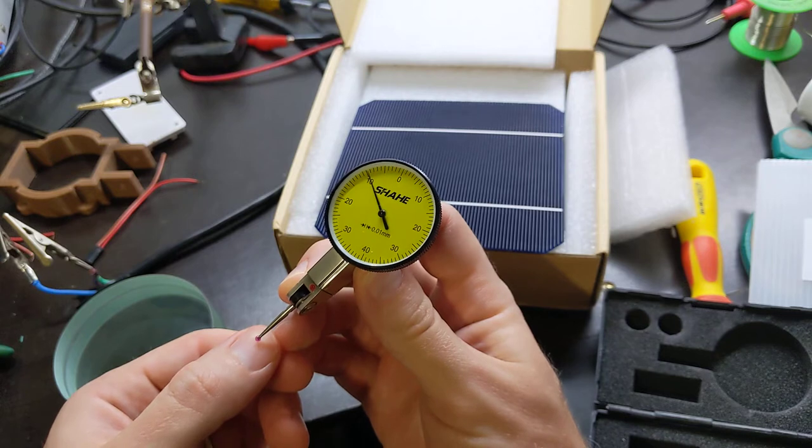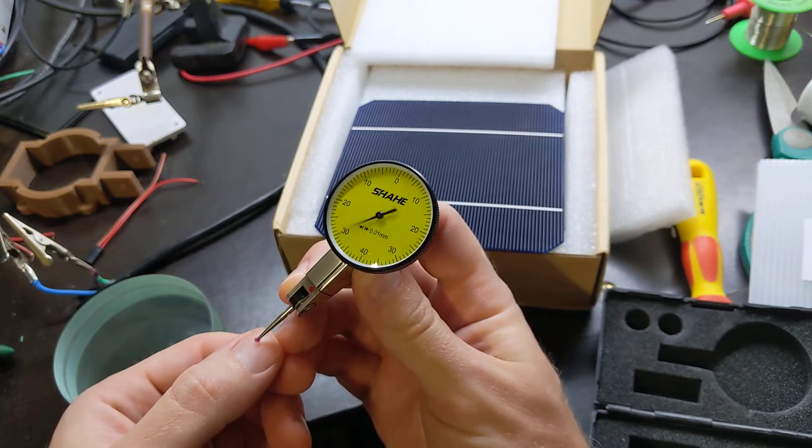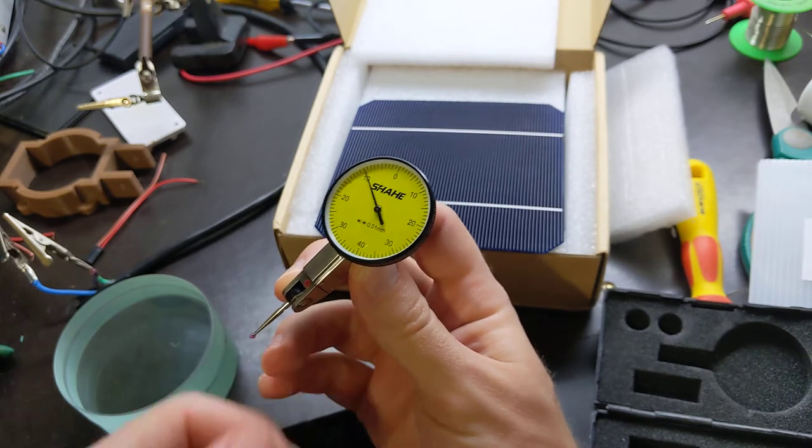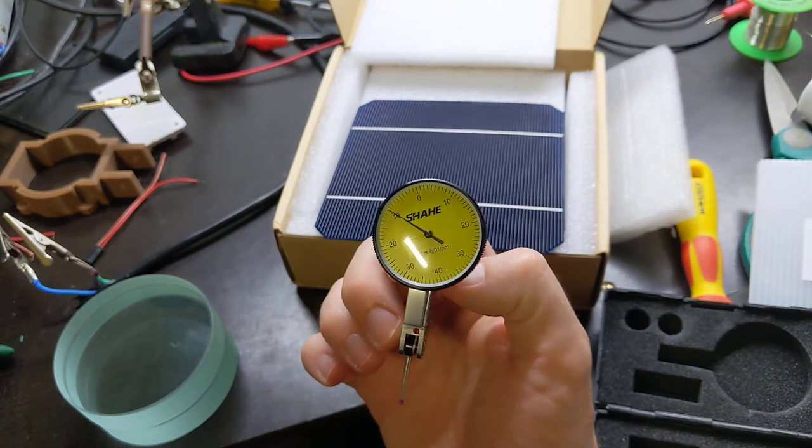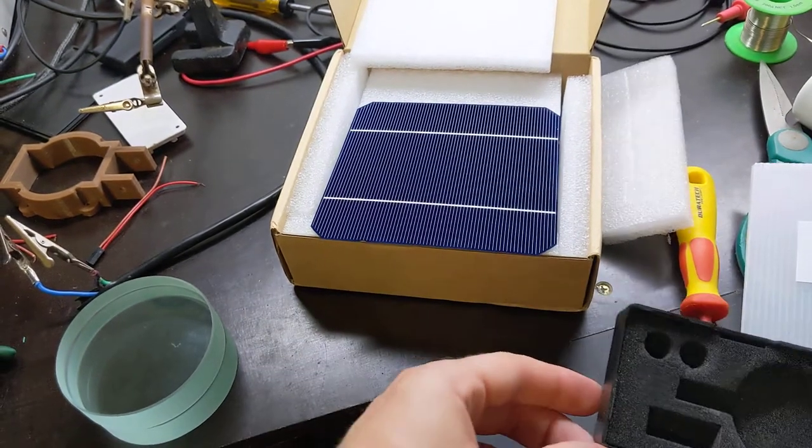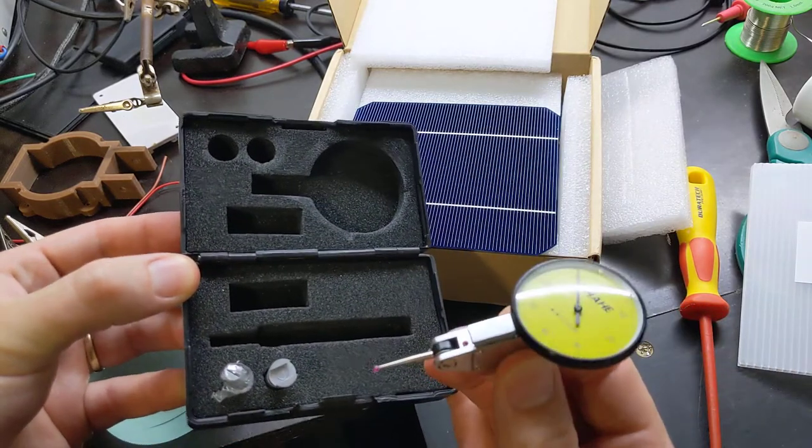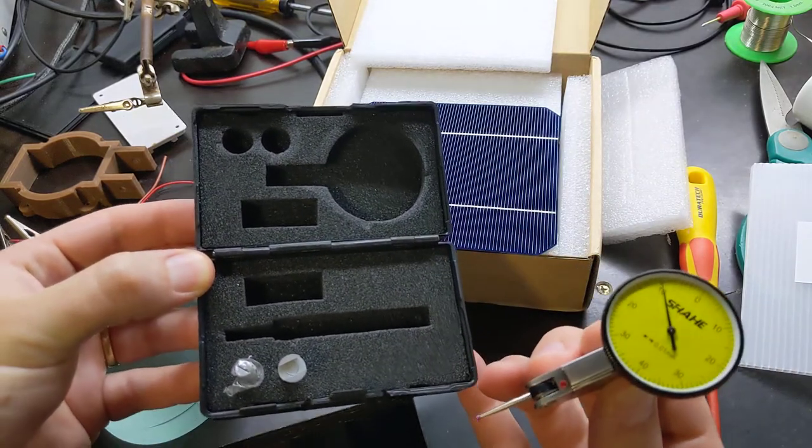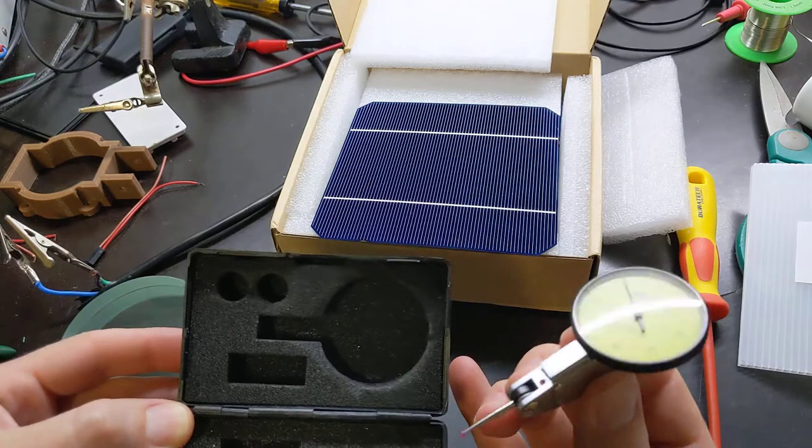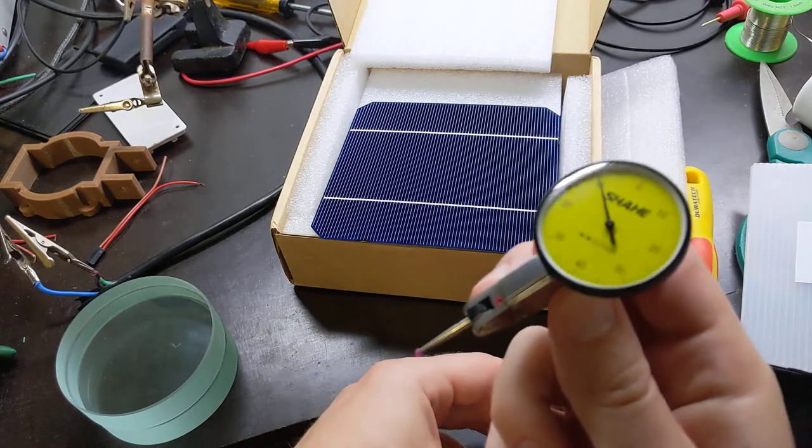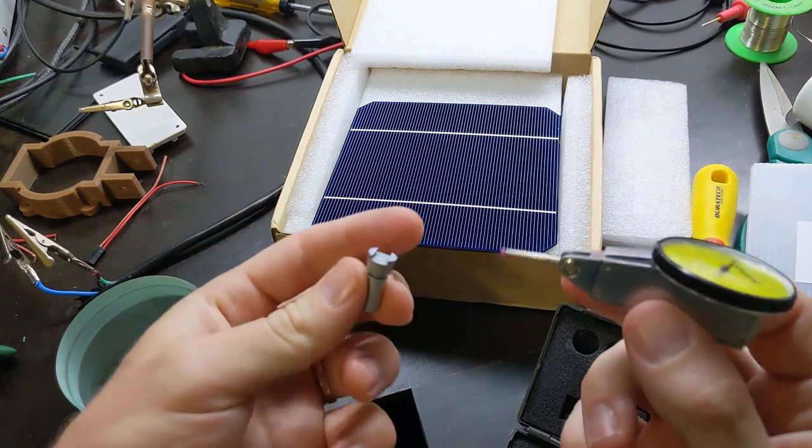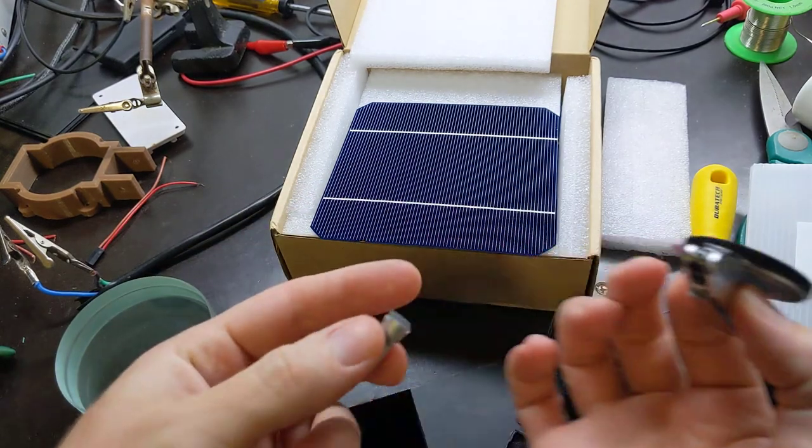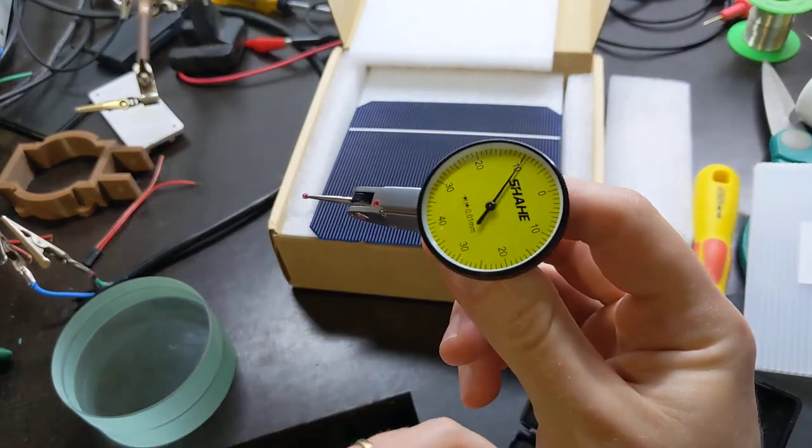So it'll do quite nicely for centering stuff in the lathe and measuring really small things. It comes in this little box. There's no paperwork with it at all. No calibration data, nothing. Just a little warranty card that says your warranty does not cover damage by man. It does come with these little mounting posts that you clip onto these little dovetails. But yeah, I'm happy with that.